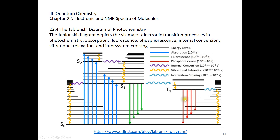You can see that the timescale for phosphorescence is much longer than for fluorescence. Phosphorescence can take much longer to occur just because it's spin-forbidden. In both fluorescence and phosphorescence, a photon may be emitted, taking the energy difference into account.